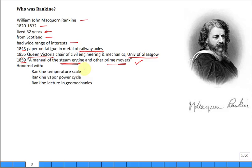So he has honored with the temperature scale known as the Rankine. You add 460 to degrees F, and that's what you get. The Rankine vapor power cycle, which we study. Annual lecture series in geomechanics. He did a lot. It's not just only in thermodynamics. He did a lot in materials and fatigue of metals.